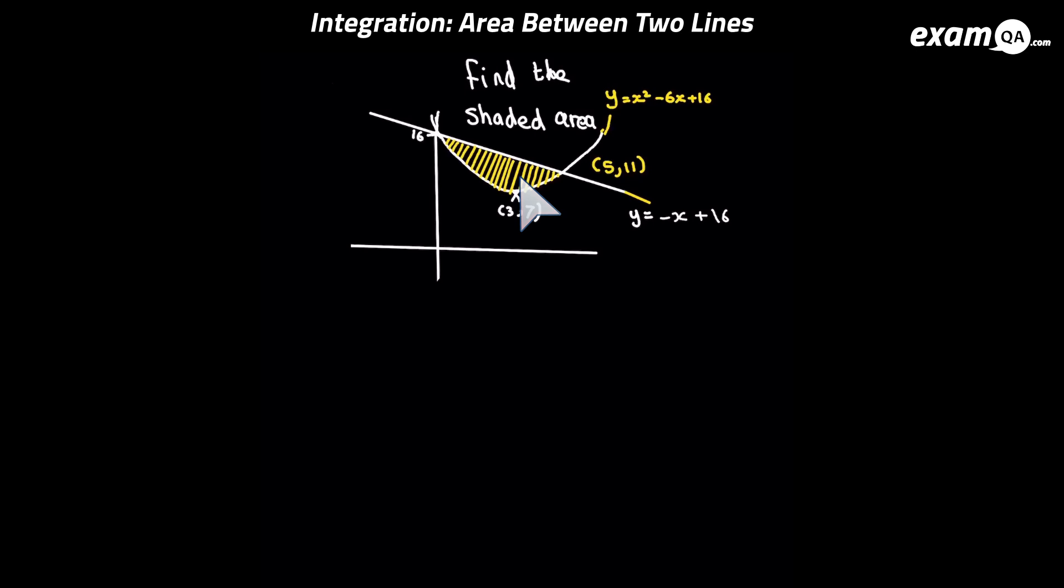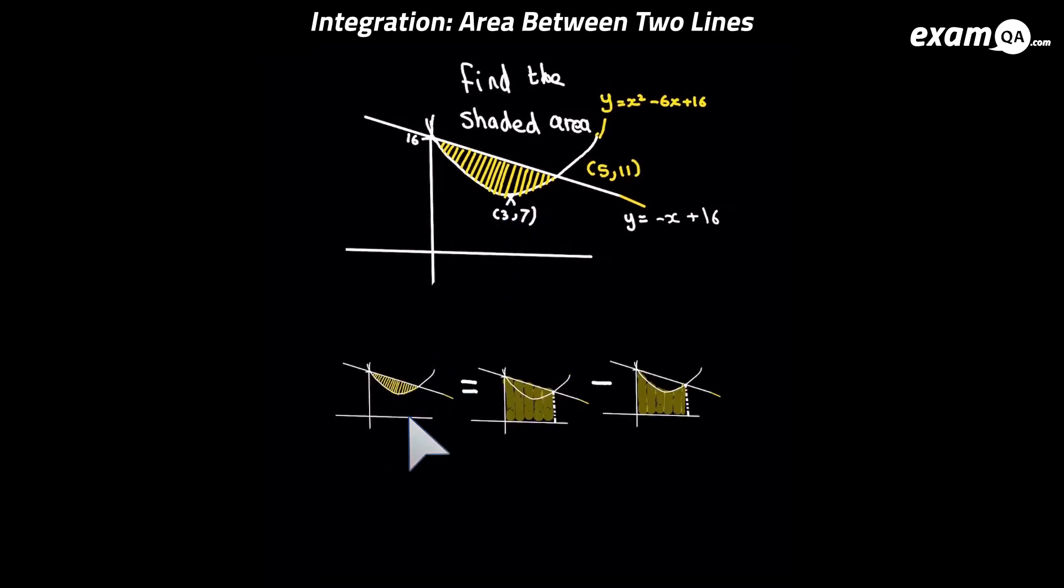Let's look at the shapes method first. So here you can see that you can split this area into a trapezium and also just look at the area under the curve. Now if you get that trapezium and the area under the curve and subtract them we're left with the area which we need to work out.